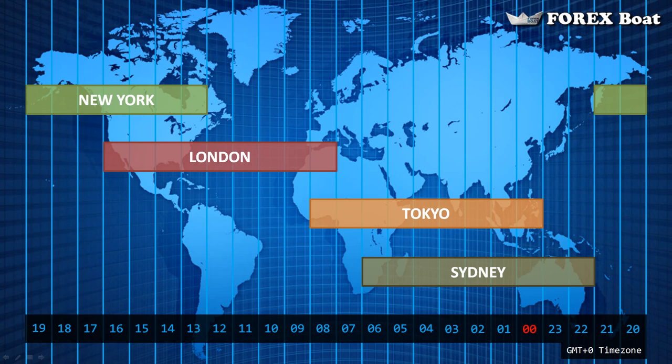You may have already noticed that some of the forex sessions overlap quite significantly. For example, the Australian session and Asian sessions overlap for the majority of their forex market hours. When these two sessions overlap, currency pairs like the Australian dollar/Japanese yen and the New Zealand dollar/Japanese yen will have their highest volatility.